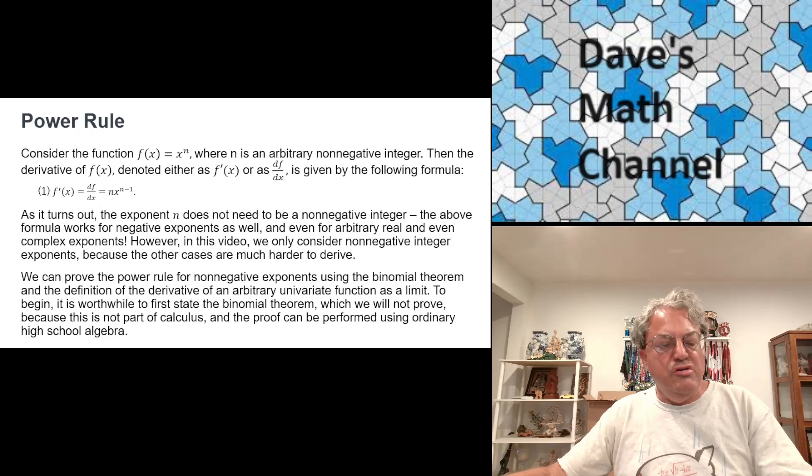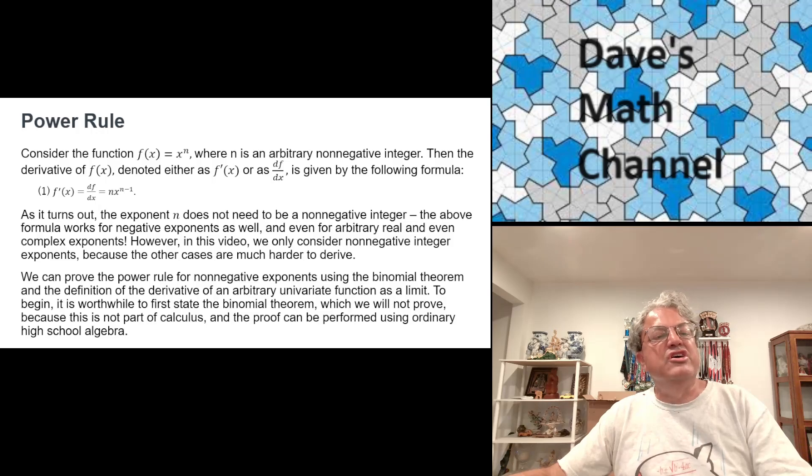But then there was another very famous mathematician named Gottfried Leibniz. He was German and he actually invented calculus about 10 years later, independently of Newton. But he had a different notation, which most people consider superior these days. He used df dx to represent the derivative of a function f of x. Just be aware that there are these two different types of notation. You'll probably see both of them in different contexts.